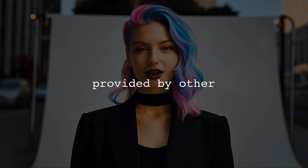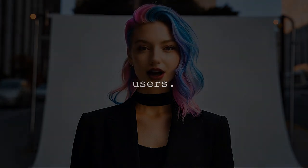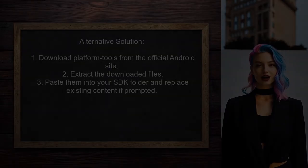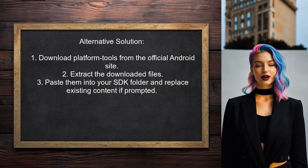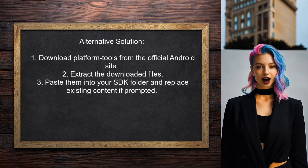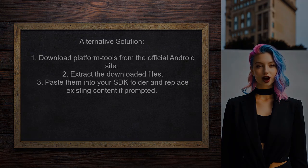An alternative solution: you don't need to download the entire SDK again. Instead, you can simply download the platform-tools package from the official Android site. This package includes ADB, Fastboot, and Systrace.